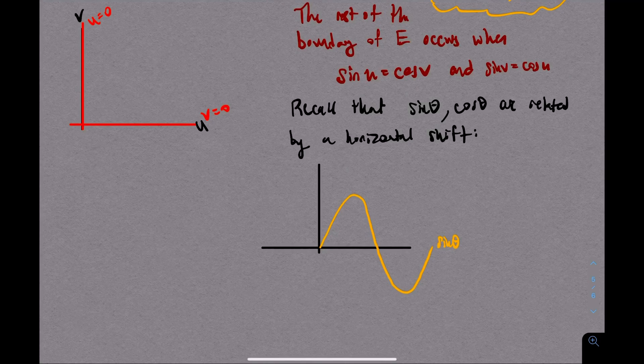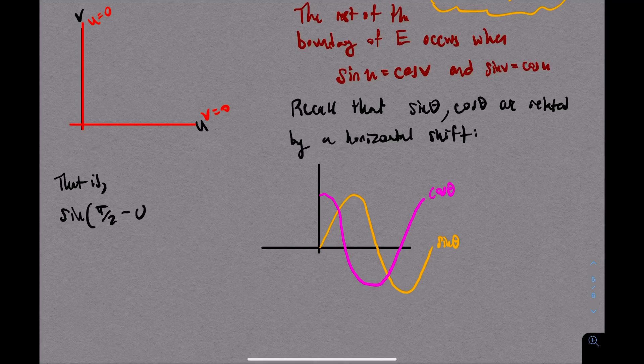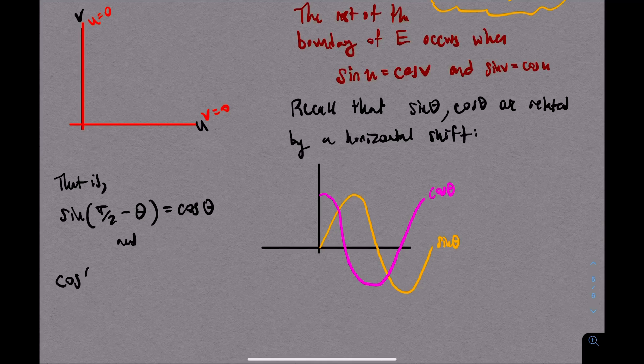The important general fact is that sine and cosine are horizontal shifts of each other. Here's a graph of sine. Here's a graph of cosine. Just scoot one of them over to get the other. In other words, here's the algebraic relation. Sine of pi over 2 minus theta, this is cosine. And cosine of pi over 2 minus theta is sine. This is one of the first trig identities you ever learn about.